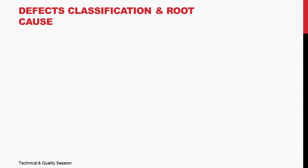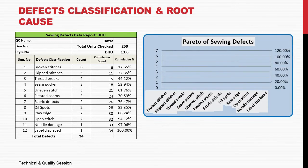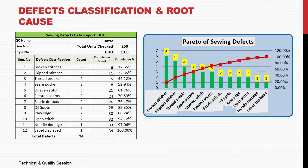Defect classification and root cause. Below is a data format with defect classification. The checker checks the sewing line garments and enters the number of defects in this format. The line's total units checked is 250 and total defects found is 34, giving a DHU of 13.6. With the data collected, you can make a Pareto chart of sewing defects by classification and find the root cause, where you can take corrective action with the line supervisor.